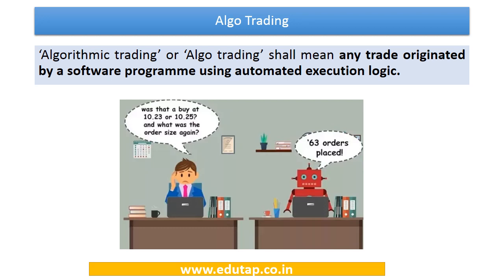Algo trading means algorithm trading — trading which is originating from a software program using automated execution logic. On one side you can see a person placing orders who gets confused, and on the other side there is a robot placing orders very quickly. Everything is programmed in this robot: if prices touch a particular range, an order is placed. These are very swift and done entirely using a software program.